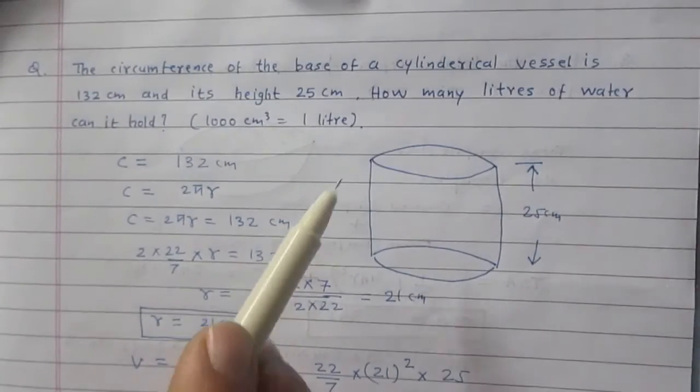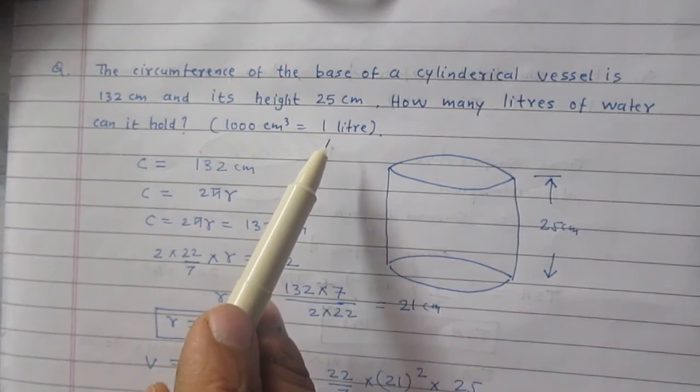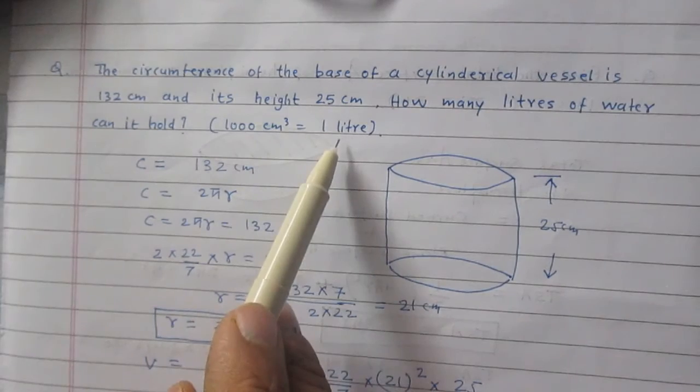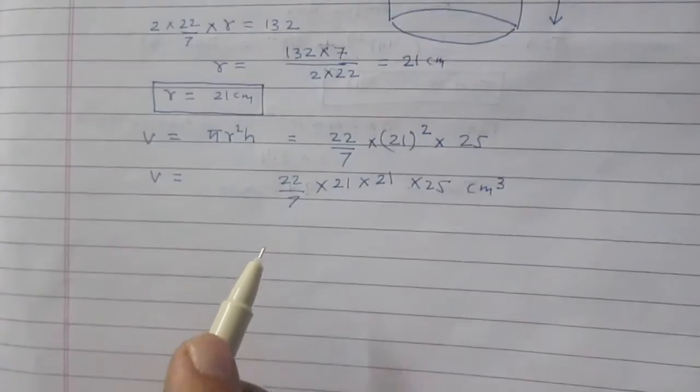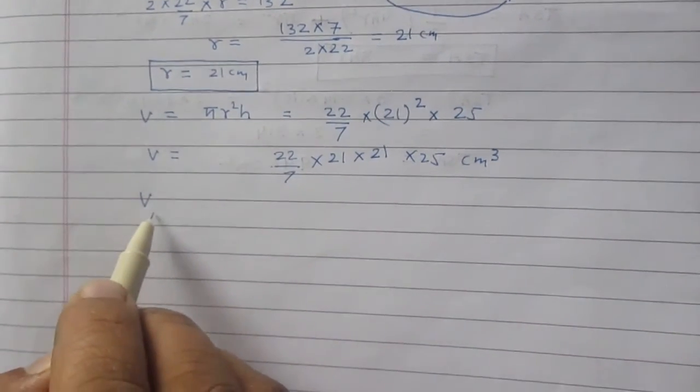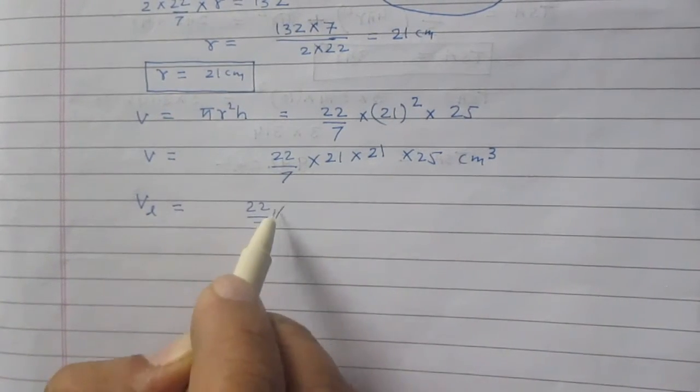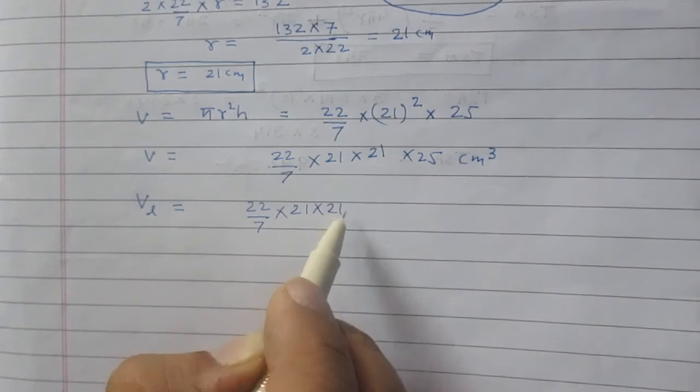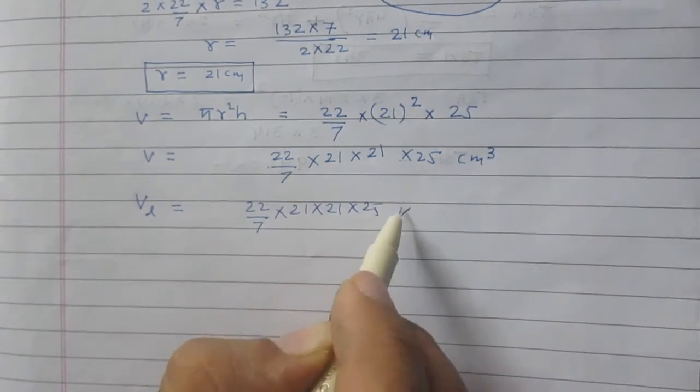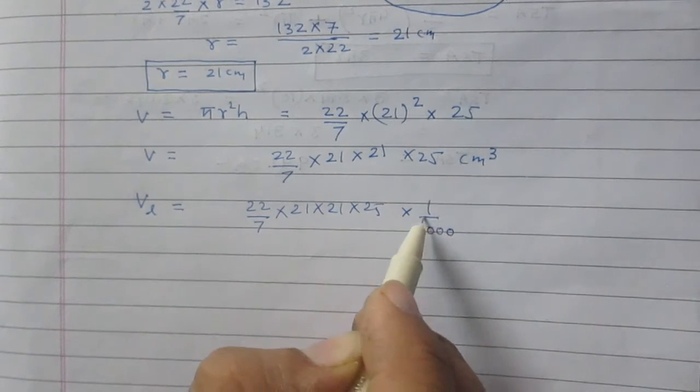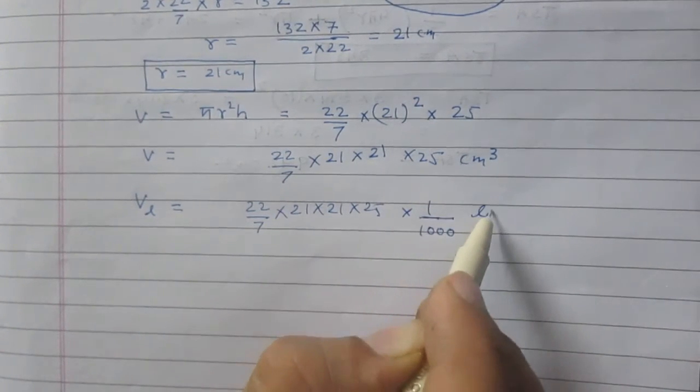We are to find the volume in liter. We are given that 1000 cm³ is equal to 1 liter of volume. So volume of this cylindrical tank in liter is 22 divided by 7, 21, then 21, 25 in multiplication with 1 upon 1000 liter.